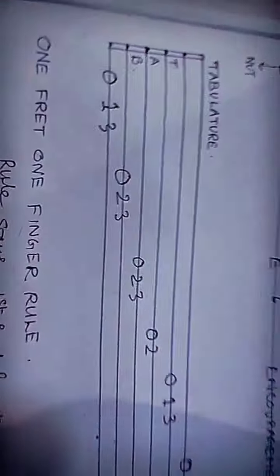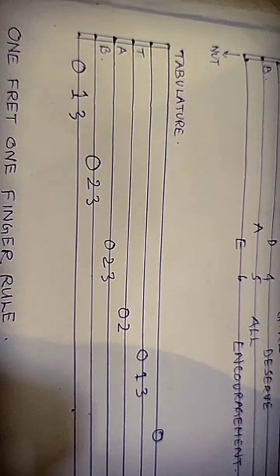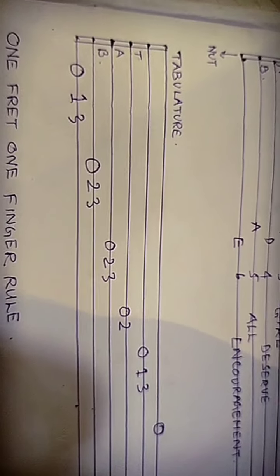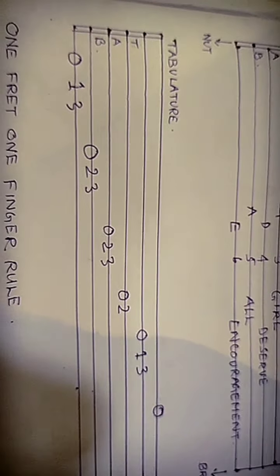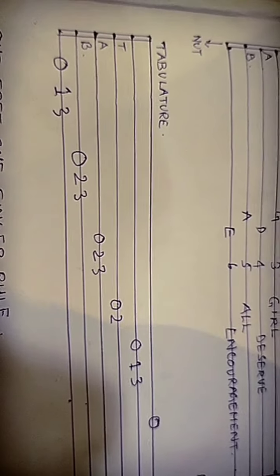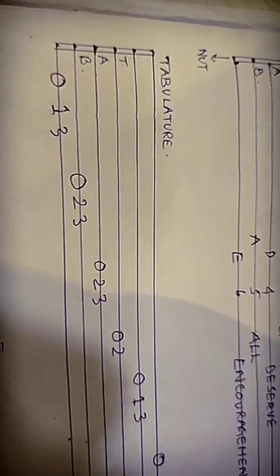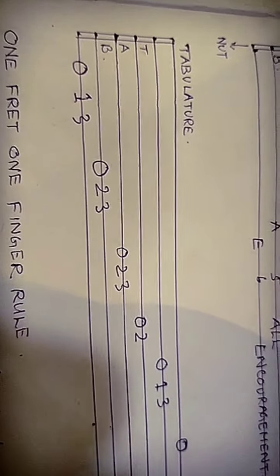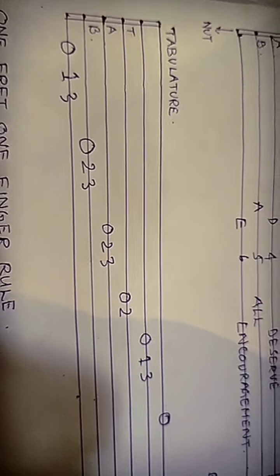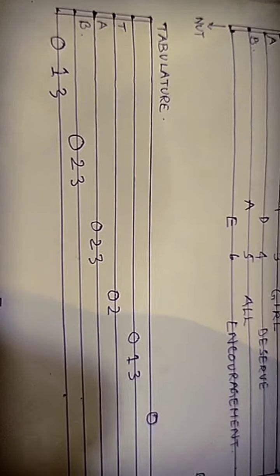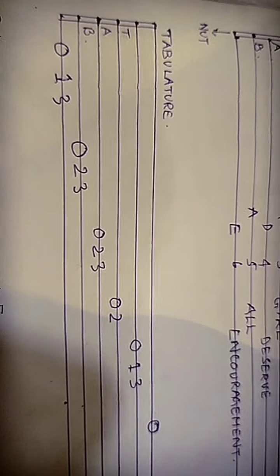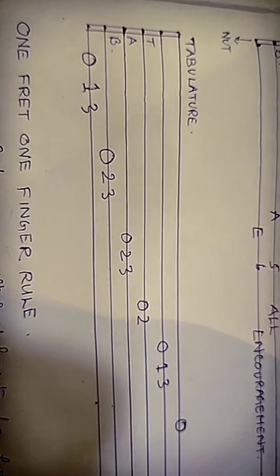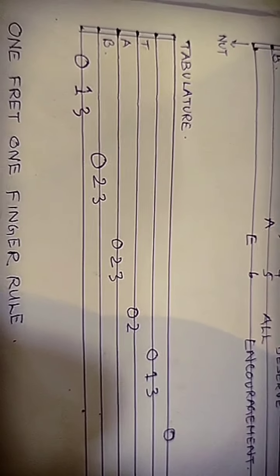Now that we know the notes of the guitar strings, we can locate a set of notes usually called the scale on the tablature. We get: 0, 1, 3 on the last string; 0, 2, 3 on the 5th string; 0, 2, 3 on the 4th string; 0, 2 on the 3rd string; 0, 1, 3 on the 2nd; and 0 on the 1st string. So we get a scale which goes E, F, G, A, B, C, D, E, F, G, A, B, C, D, E.